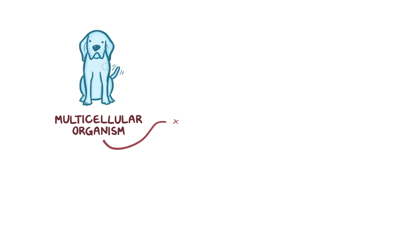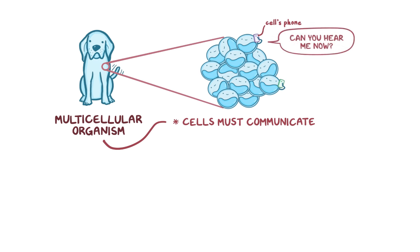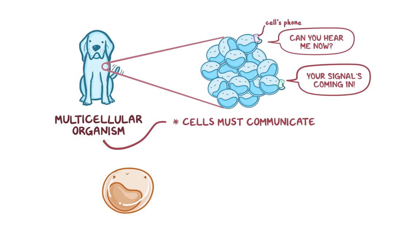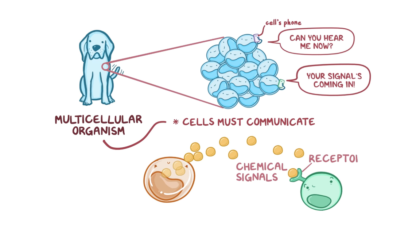To make a multicellular organism, cells must be able to communicate with one another. And to do it, cells often send out tiny chemical signals that act on the receptors of other cells.